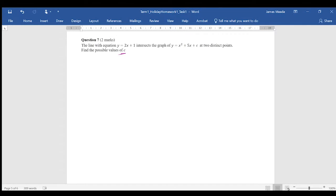Algebraically, where two lines intersect, that means that they share the same x and y values. So we can say if we've got y equals 2x plus 1 and y equals x squared plus 5x plus c, then this y and this y must be the same thing.